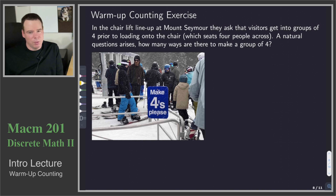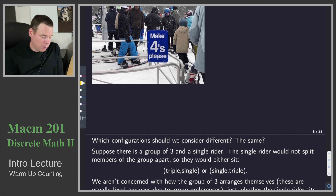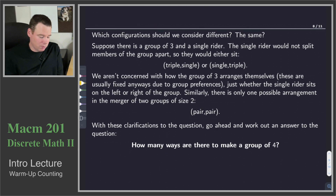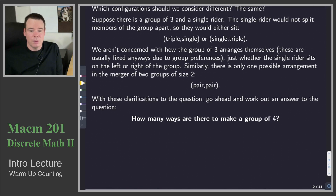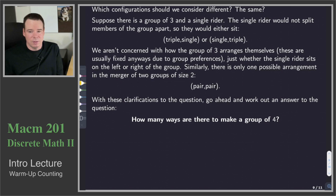When you start to think about this problem — how many ways are there to make a group of four — you probably start to think about what you consider to be the same configuration and what you consider to be a different configuration. A part of counting objects is first encountering the question: which configurations do we consider different, and which ones do we consider the same? Because ultimately, it's the different configurations that we are attempting to count.